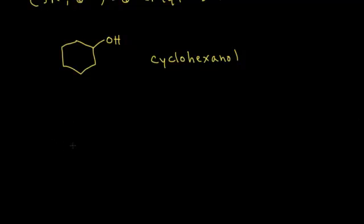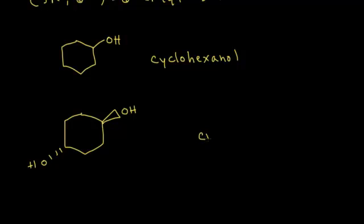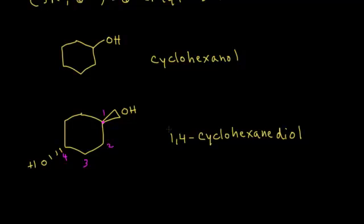What about a ring system with two hydroxyl groups? If we have one OH coming out at us and one OH going away from us, we have two alcohols in the same molecule, so the prefix is di — this is a diol. The name is based on cyclohexane: cyclohexanediol. We number the ring — carbon 1 and carbon 4 carry the OH groups — and the two alcohols are trans to each other. So the full name is trans-1,4-cyclohexanediol.